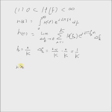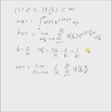Hence h of n can be rewritten as limit k tends to infinity 1 by k, as delta f k is replaced by 1 by k, the summation k equals 1 to capital K h of f k e power j 2 pi small k by capital K n. Now if you put n equal to 0 on both sides, you get h of 0.